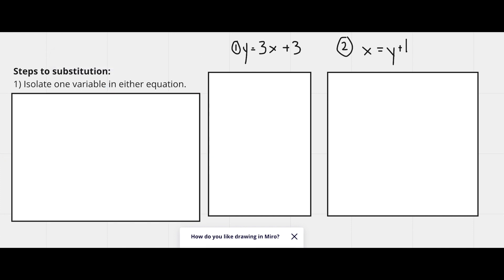The first step is to isolate one variable in either equation. Now, the thing is, in this example, I have made it so that there already are variables that are isolated, like x right here, it's already isolated, and y right here, it's already isolated. So we can use either one. So we can skip that step for now.